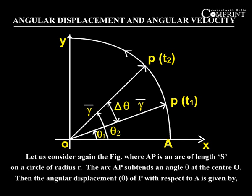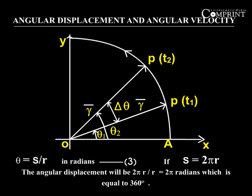Then the angular displacement theta of P with respect to A is given by theta equals s by r in radians. If s equals 2πr, the angular displacement will be 2πr by r equals 2π radians, which is equal to 360 degrees.